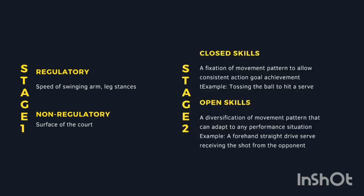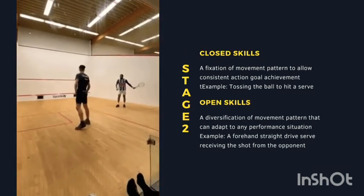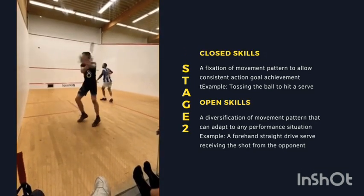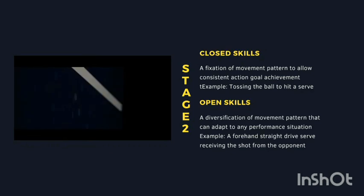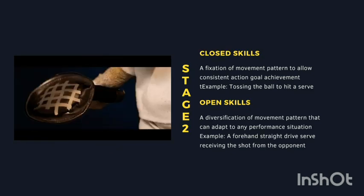At stage two, we focus on closed skills and also open skills. A closed skill is a fixation of movement pattern to allow consistent action goal achievement — for example, tossing the ball to hit a serve. For open skills, it is a diversification of movement pattern that can adapt to any performance situation — for example, a forehand straight drive when receiving the shot from the open end.